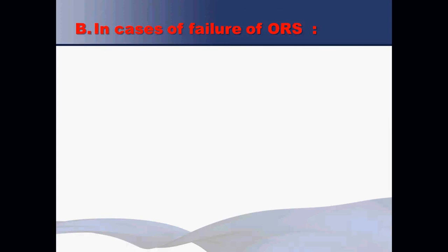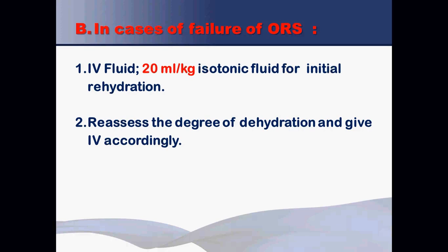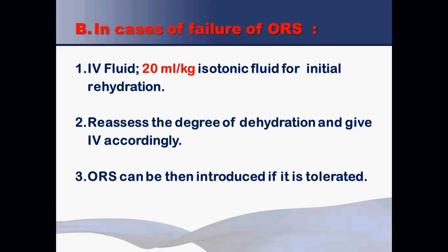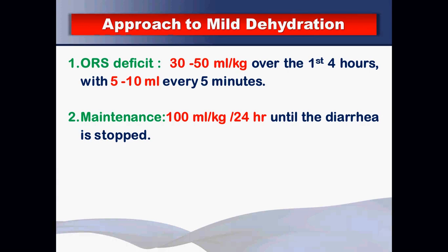If ORS fails in moderate dehydration, stop ORS and give a bolus of 20 ml/kg isotonic fluid IV, then reassess the degree of dehydration. If the patient remains moderate, continue ORS; if severe dehydration is now present, switch to IV fluid management. For mild dehydration, the deficit is 30–50 ml/kg given over the first 4 hours, followed by maintenance ORS over 24 hours, replacement of ongoing losses, and age-appropriate diet.